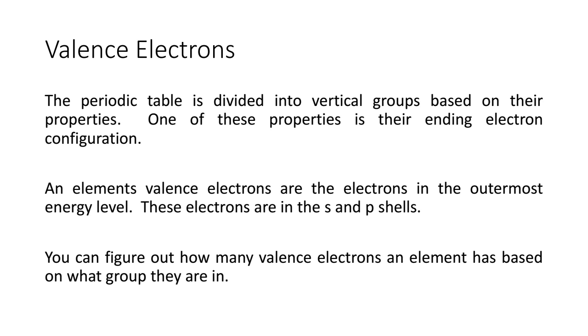These notes are on valence electrons and electron dot diagrams. Let's talk about valence electrons. The periodic table is divided into vertical groups based on their properties. One of these properties is their ending electron configuration.